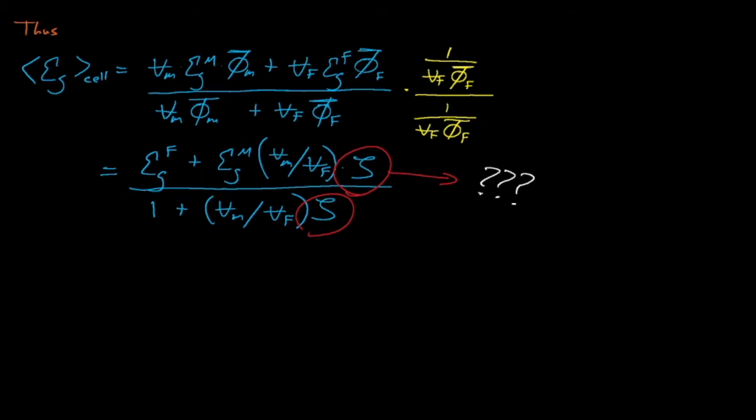then we can obtain some very good estimates for the homogenized cell's effective cross-section. So how can we calculate the cell disadvantage factor? Several methods exist for doing this, and we'll briefly discuss one that uses the four factors. Let's start by discussing how homogenization affects the four factors. We'll start with eta.